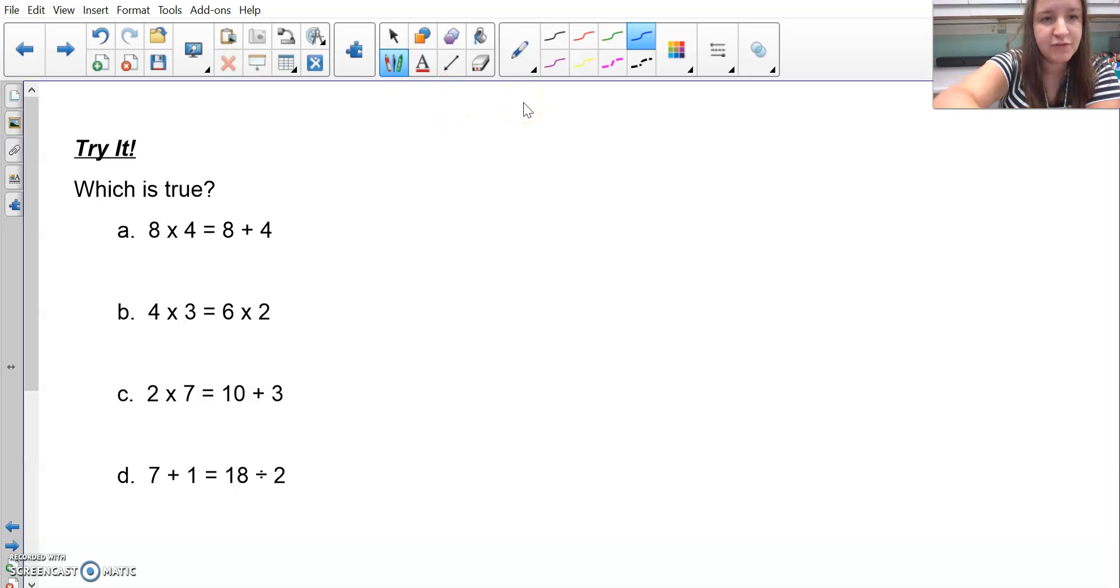So eight times four is going to be equal to 32, and eight plus four is 12. So 32 is not equal to 12. Therefore, I would not pick A as something that is true.